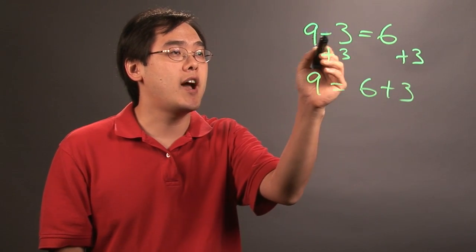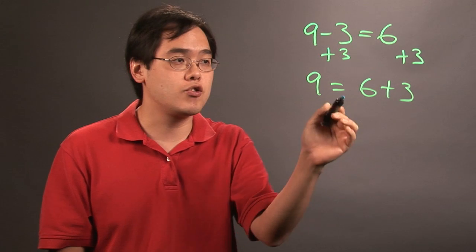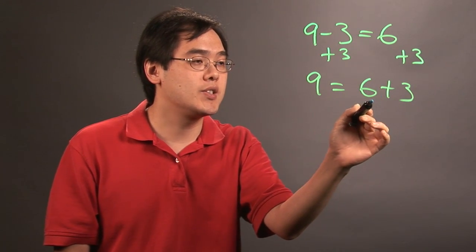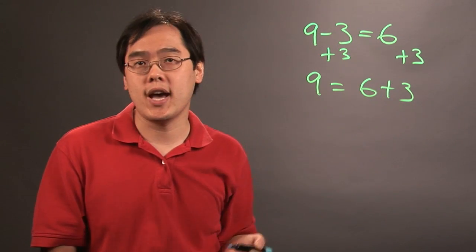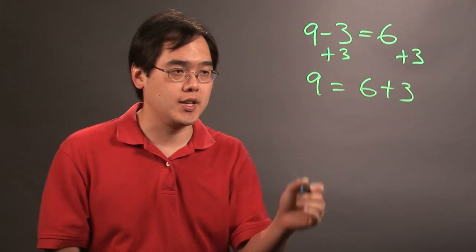So if 9 minus 3 equals 6 is indeed true, then to check it by adding 3 to both sides, you can say that 6 plus 3 equals 9. So that's a way of checking things.